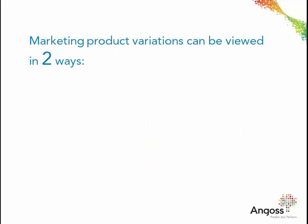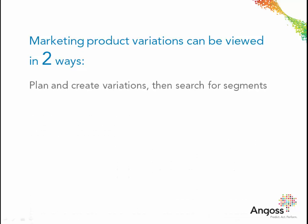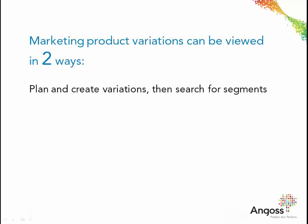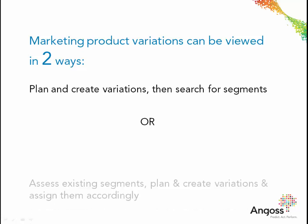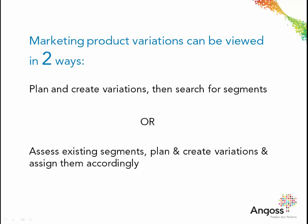Marketing product variations is based on understanding a variation's target market and the characteristic groupings that it contains. The process can be viewed in two ways: first, you can plan and create variations and then search for segments; or you can access existing segments, plan and create variations and assign them accordingly. Regardless of the method chosen, clustering algorithms will play a part in determining and distinguishing customer segments or groups.